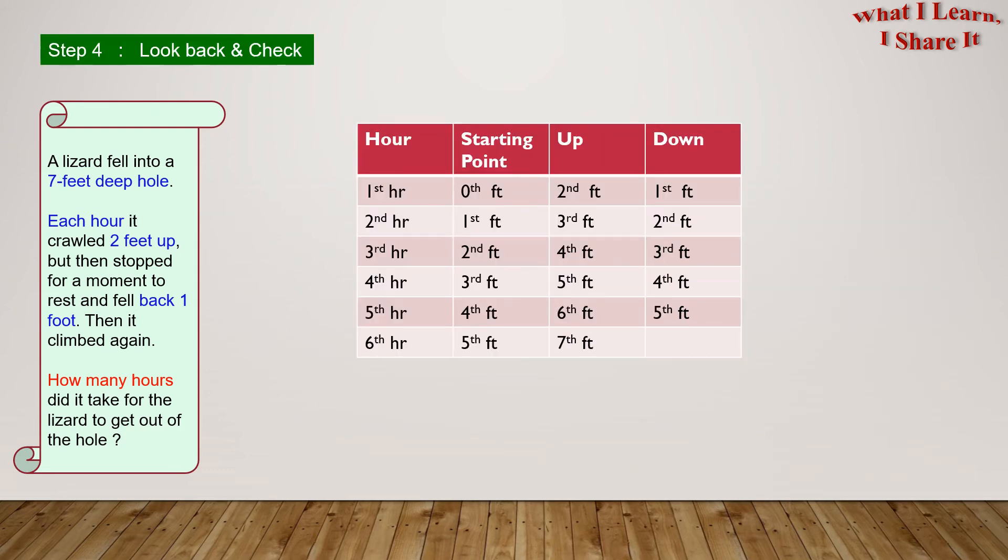Step four. Look back and check. So, we could go through this chart again, and see if we did all the steps properly. On the first hour, the lizard starts from the zeroth foot, goes up two feet, and then falls down one foot. Then it'll start from the first foot, go up to the third foot, and then down to the second foot. In the third hour, it'll start from the second foot, go up to the fourth foot, and then go back to the third foot.